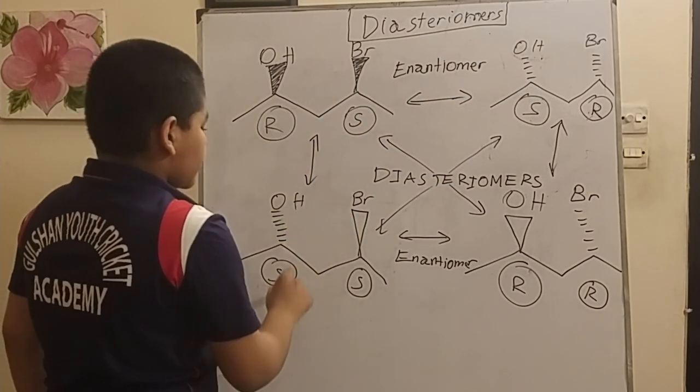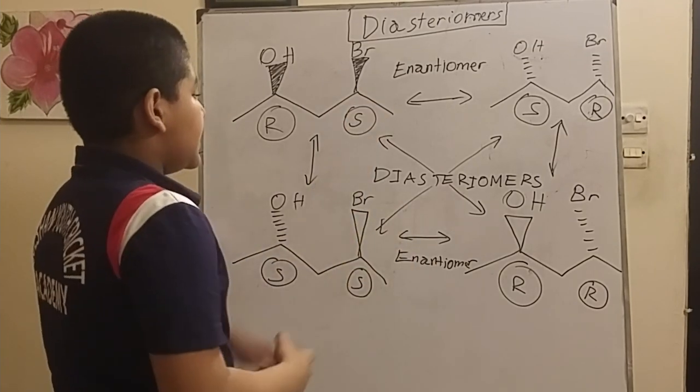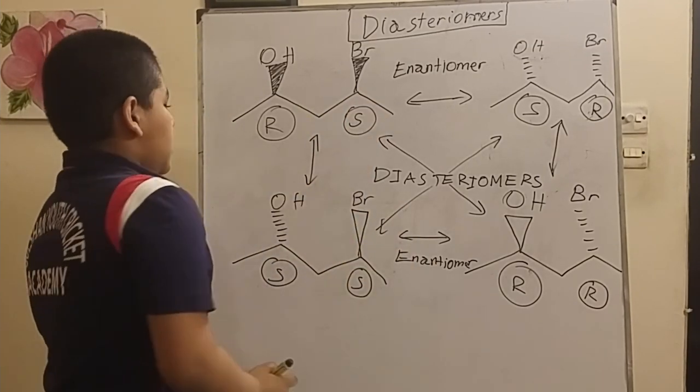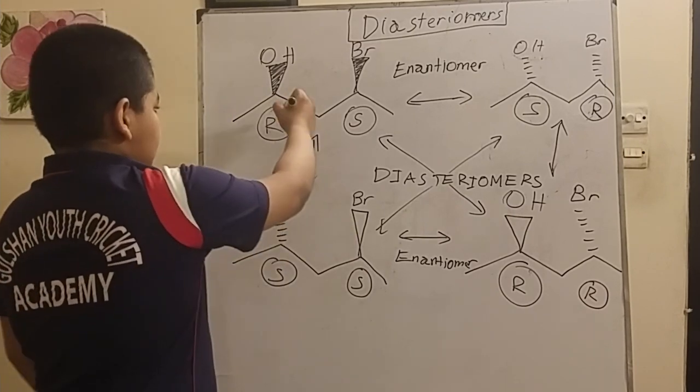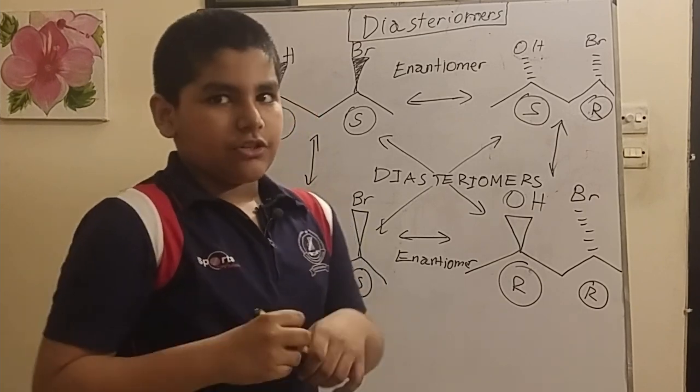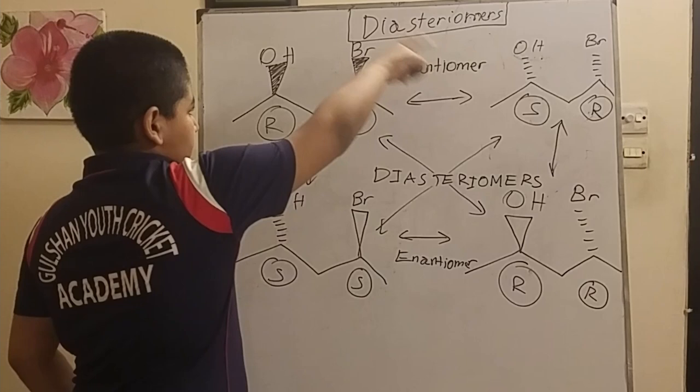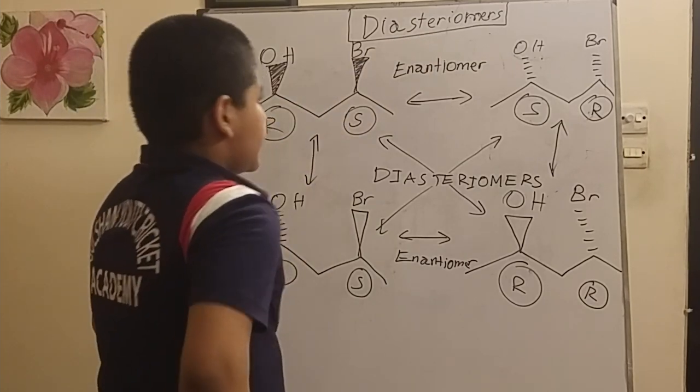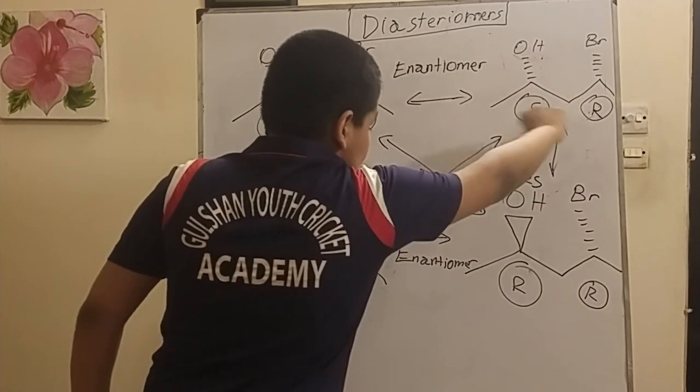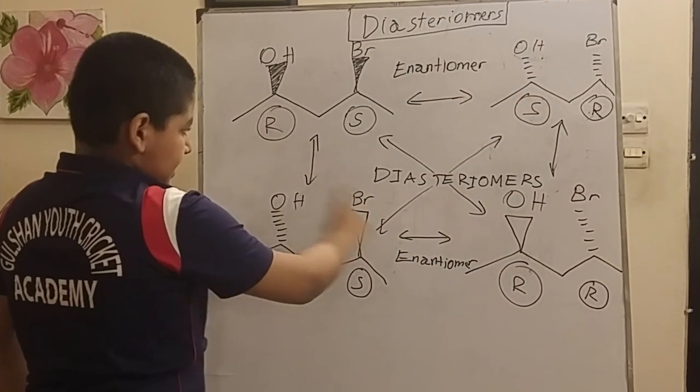In this example, we can see that these are enantiomers. But from here to here, we can see the R turned into an S, even though this S is the same. These are diastereomers because this is inverting one chiral center, but they aren't mirror images of one another. If you were to check it yourself, you can see that this is the mirror image and this is it, but they still are linked as diastereomers.